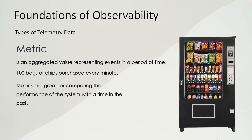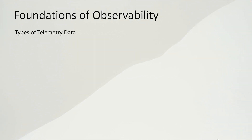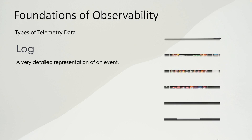Metrics are great for comparing the performance of the system over similar time periods. For example, today we sold 100 bags of chips every minute, but last week we sold 200 bags of chips every minute. In this case we see a decline in sales, and then we can investigate why that decline occurred.